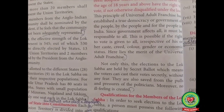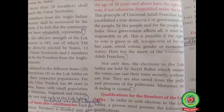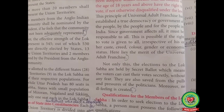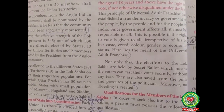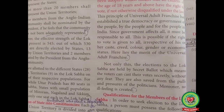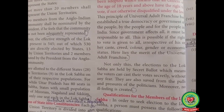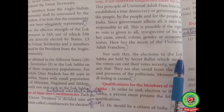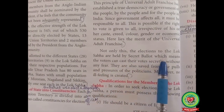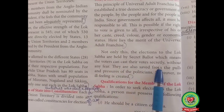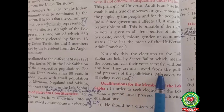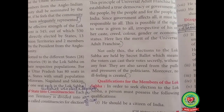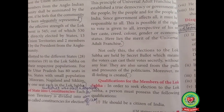The Lok Sabha members are elected by direct elections under universal adult franchise. All citizens of the age of 18 years and above have the right to vote without any discrimination of social status, caste, gender, or any other restrictions. The elections to the Lok Sabha are held by secret ballot, which means voters can cast their vote secretly without any fear, saved from the pulls and pressures of politicians.